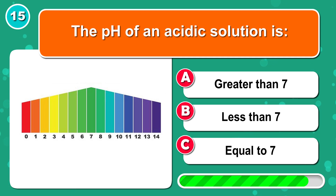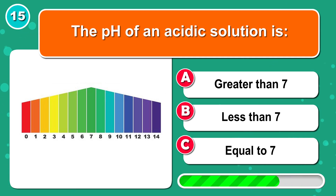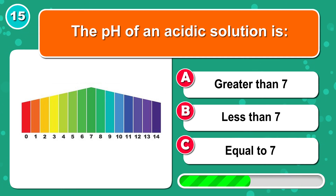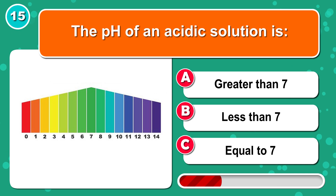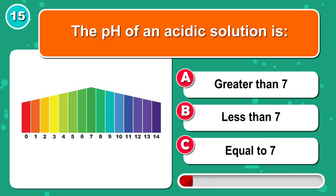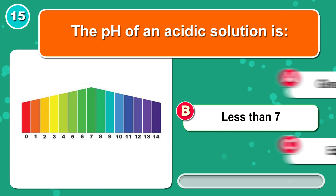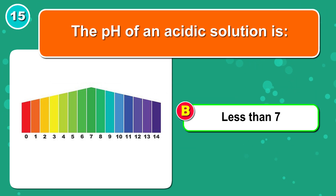The pH of an acidic solution is... It's B: less than 7.